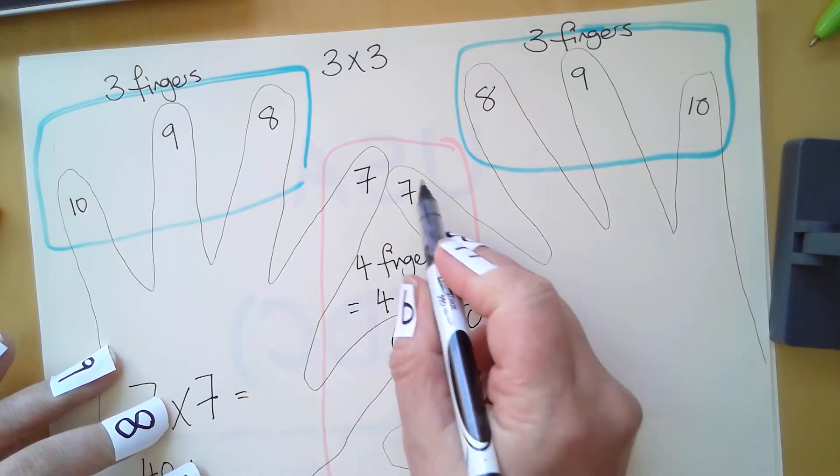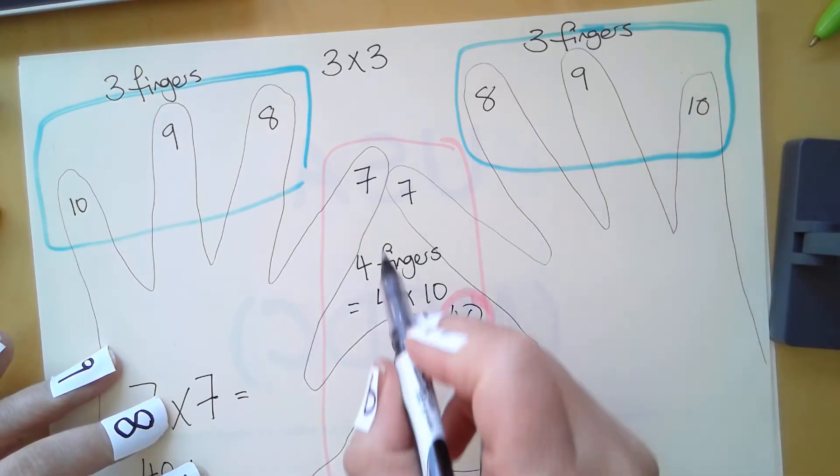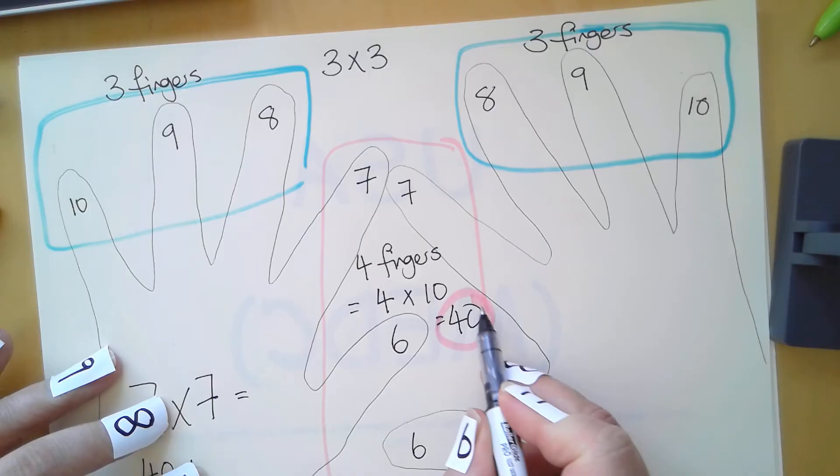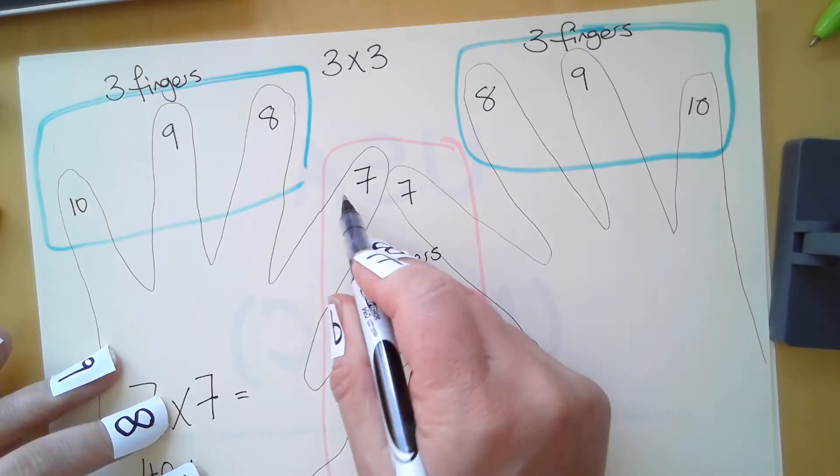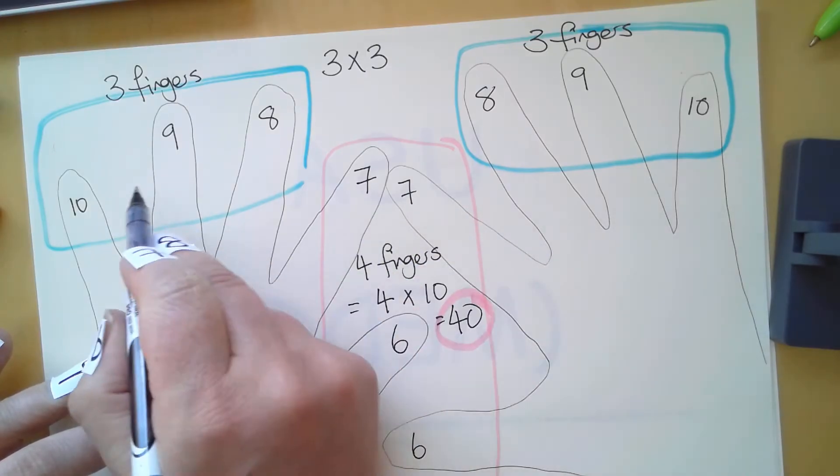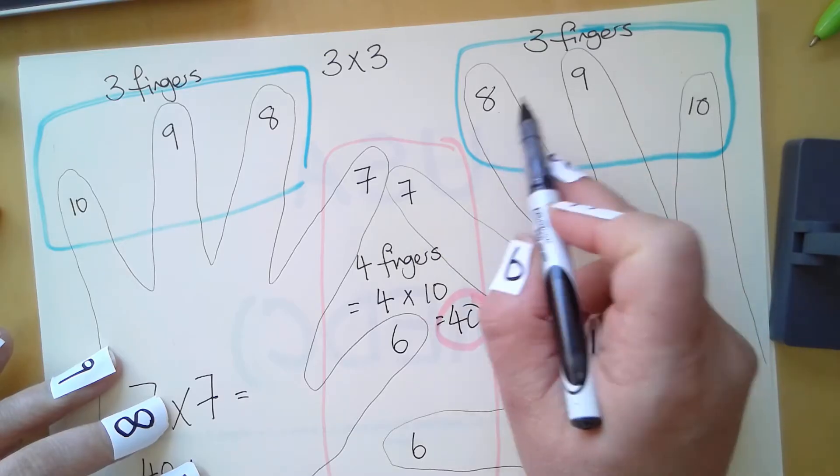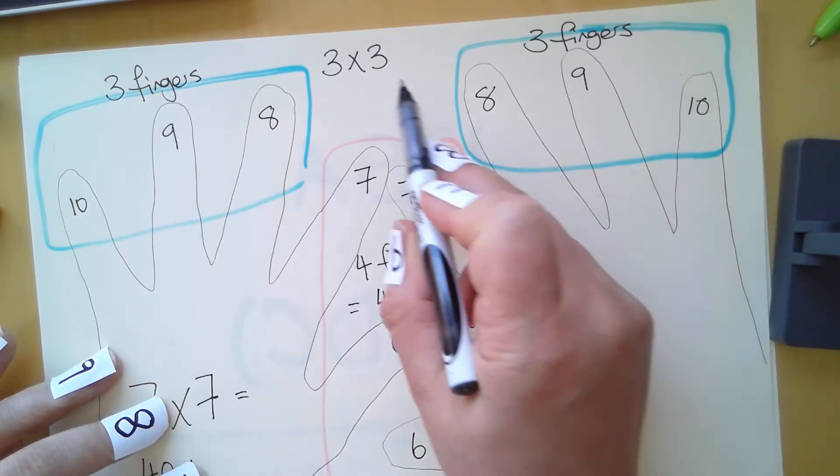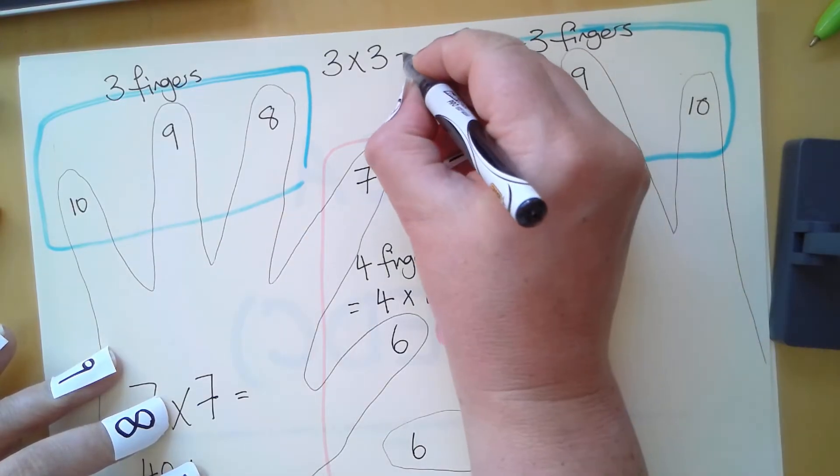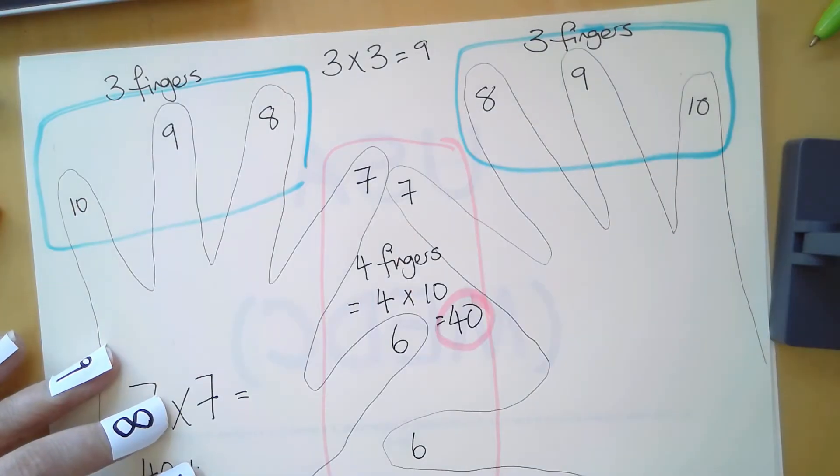Here we multiplied by ten - we added the fingers on both hands and multiplied by ten to get forty. These are our tens: one, two, three, four fingers. Here we count the fingers on one hand and multiply by the fingers on the other hand, which equals nine.